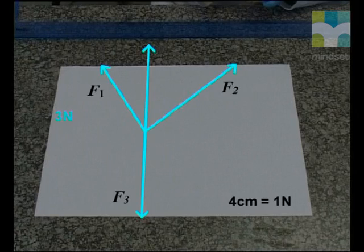Force F1 was 3 newtons. So we use a length of 4 cm to represent 1 newton. So force vector F1 is a vector 12 cm long because the force was 3 newtons. Force vector F2 is a vector 8 cm long because it was 2 newtons. And finally, force vector F3 will be a vector 16 cm long because it was 4 newtons.